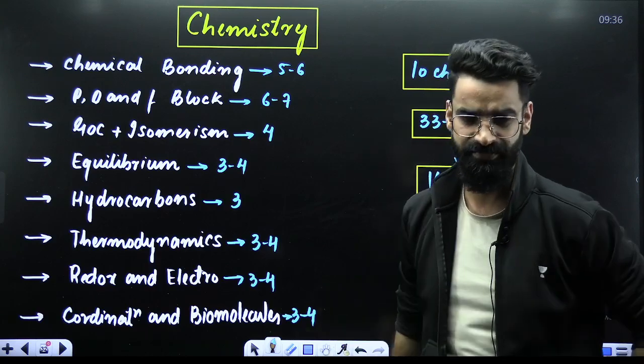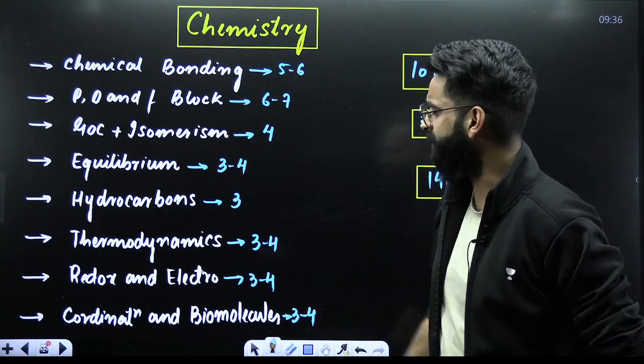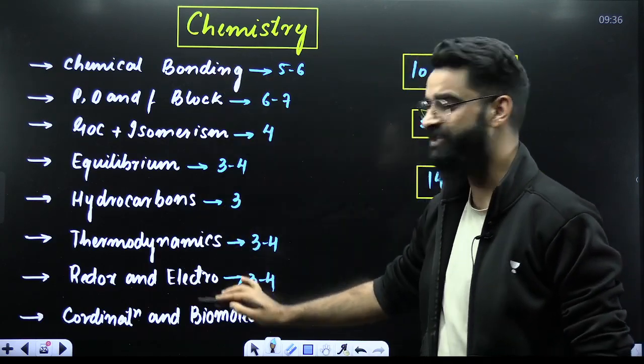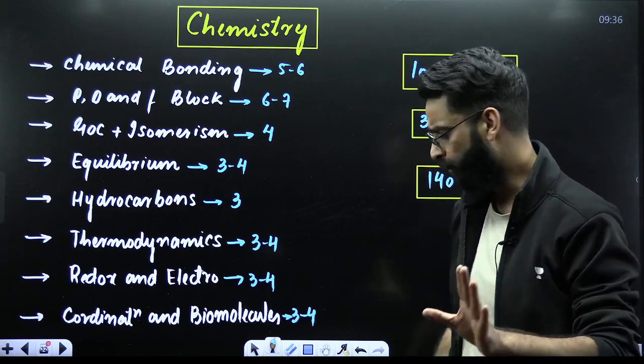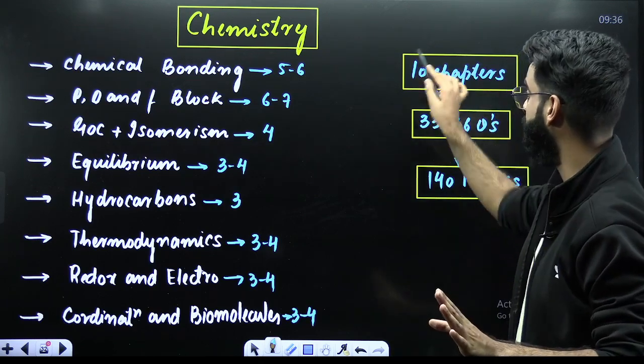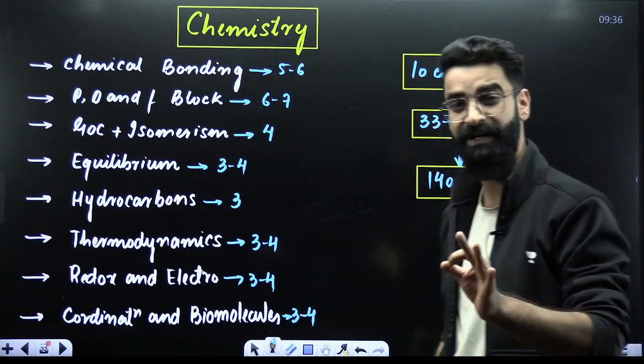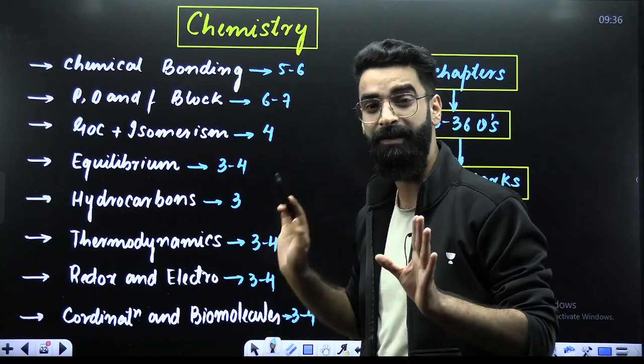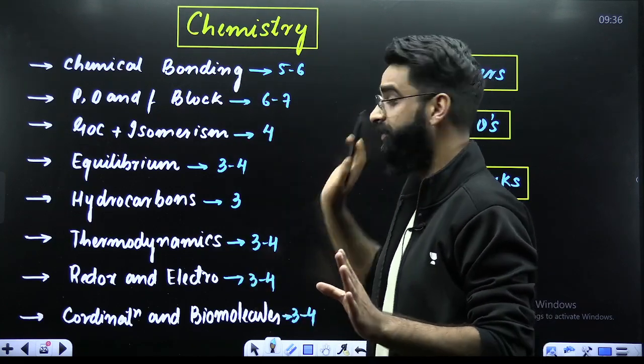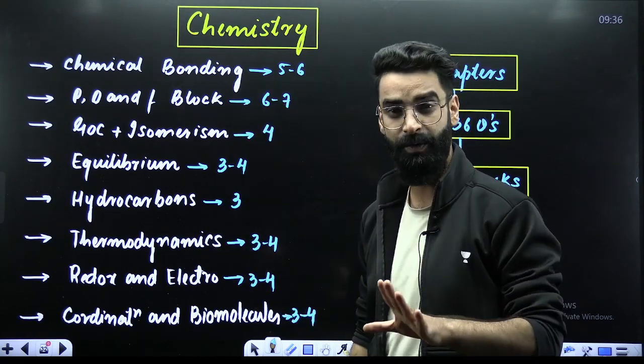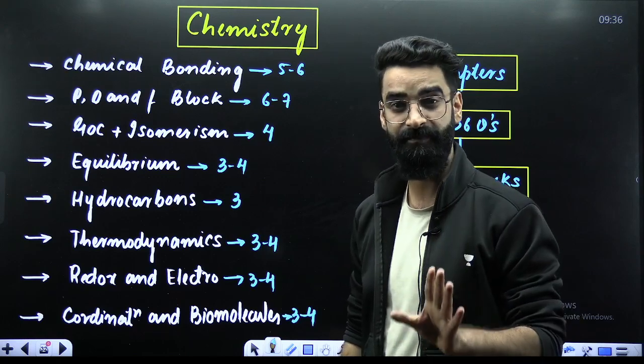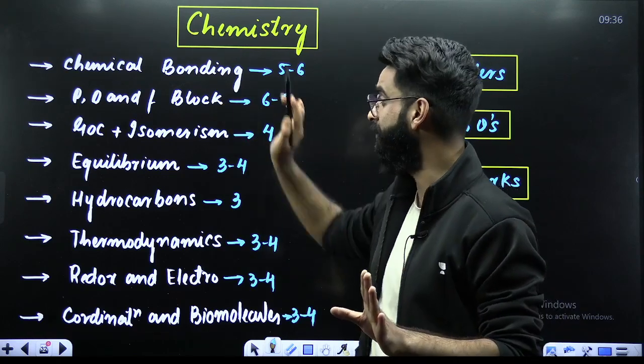Have a look people, starting with my subject that is Chemistry. When it comes to Chemistry, these are your highest weightage chapters. In total, I have mentioned some 10 chapters in Chemistry which are your highest weightage chapters starting with Chemical Bonding. In Chemical Bonding, you'll be expecting 5 to 6 questions including periodic classification.